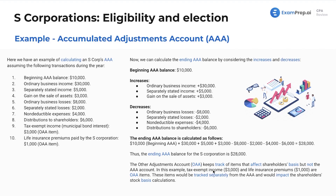The OAA keeps track of items that affect shareholders' basis but not the AAA account. In this example, the tax-exempt income of $3,000 and the life insurance premiums of $1,000 are OAA items. These items would be tracked separately from the AAA and would impact the shareholders' stock basis calculations.